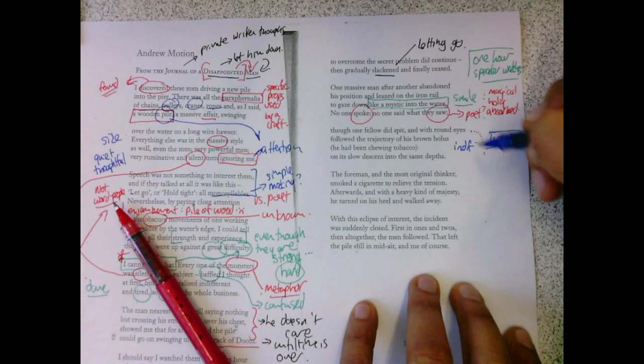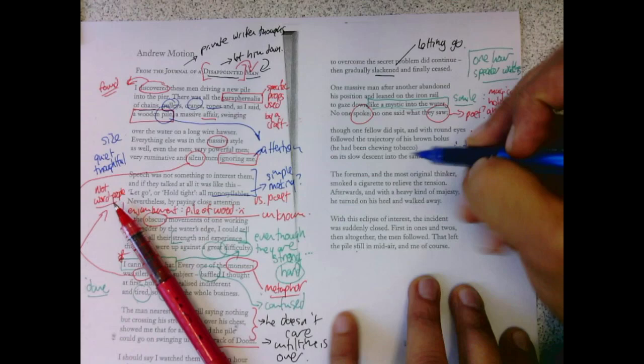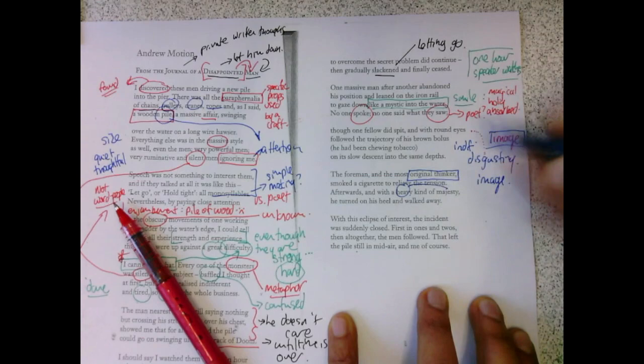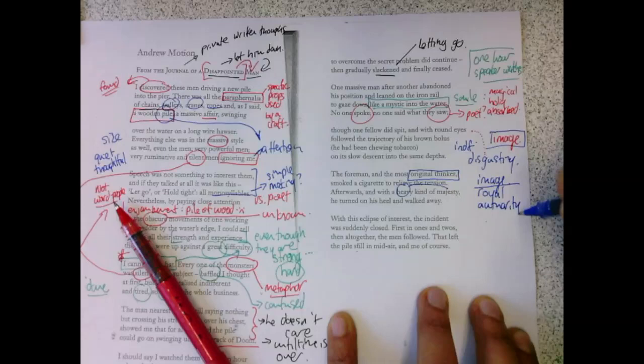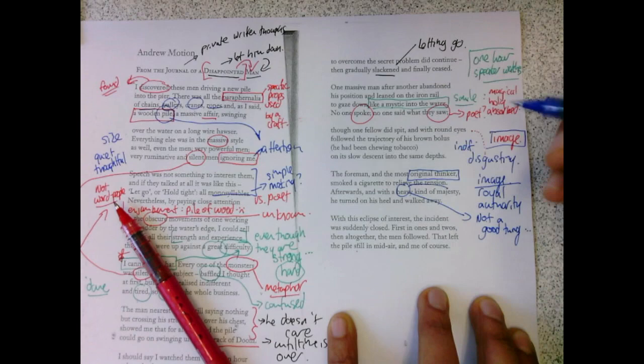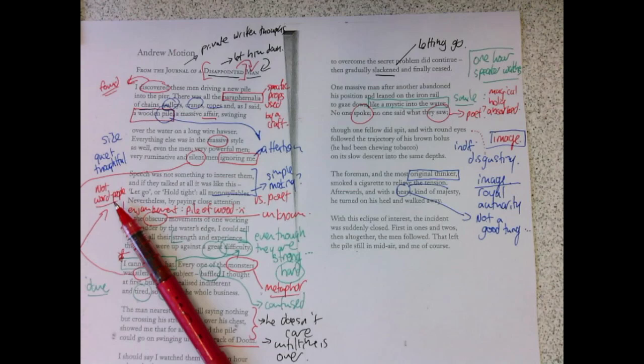Suggesting the foreman, and the most original thinker, smoked a cigarette to relieve the tension. Another image. That's smoke. Afterwards, with a heavy kind of majesty. So, he's royal. He's the authority. But he's heavy. Suggesting, you know, it's not a good day. It's not a good thing, what's happened. And he turned on his heel and walked away. They're not happy about it. So, this is rather a simple story of some wood that can't get moved, and a guy watching it.